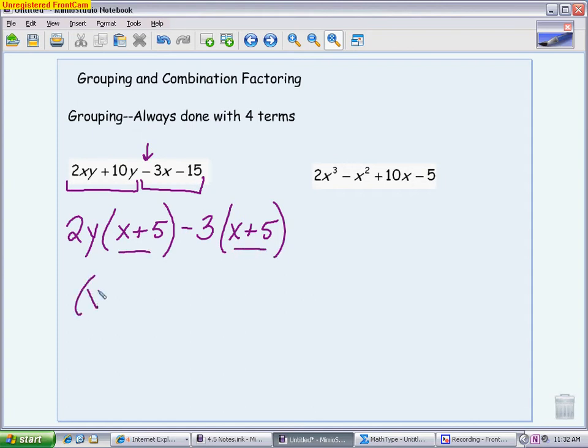What you should see is these are like factors. So that like factor can be brought to the front. And then the stuff that you pulled out, those GCFs of the original, that's going to go in its own parentheses. At this point, it is done. It is now factored. We took something that was four terms, and we factored into two binomials.